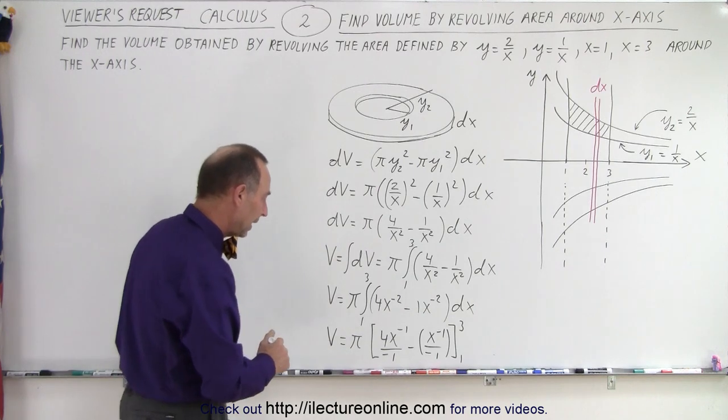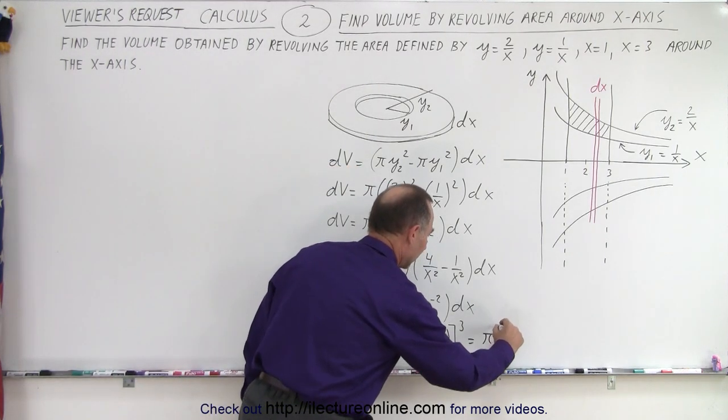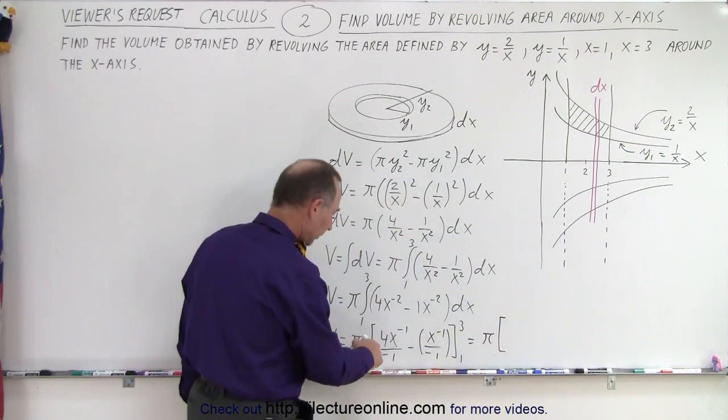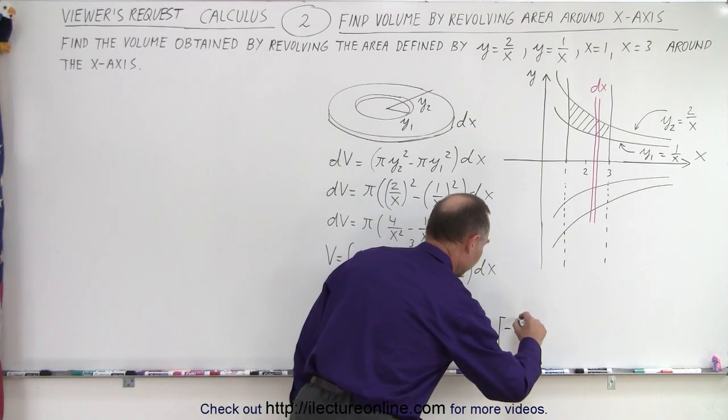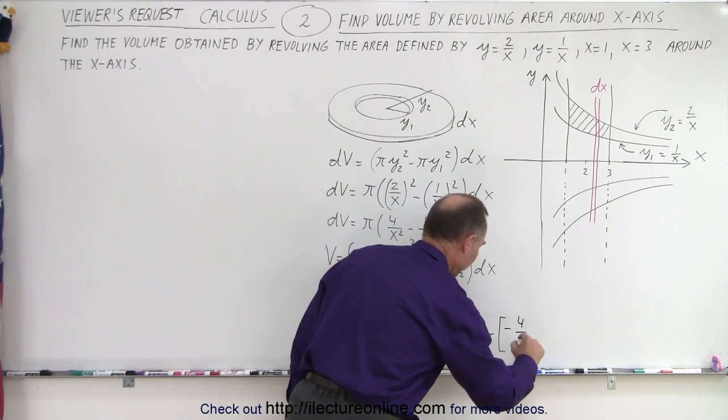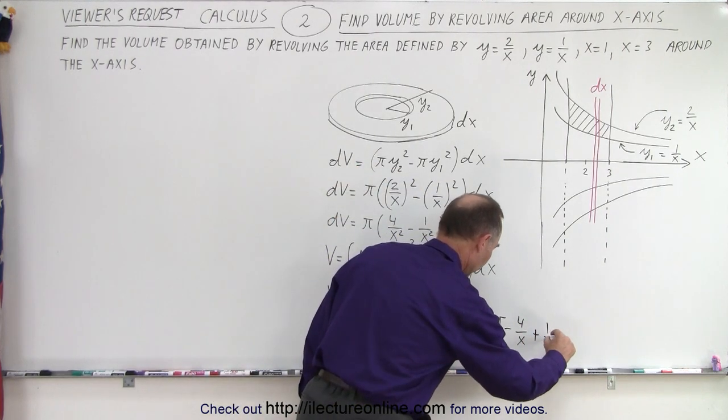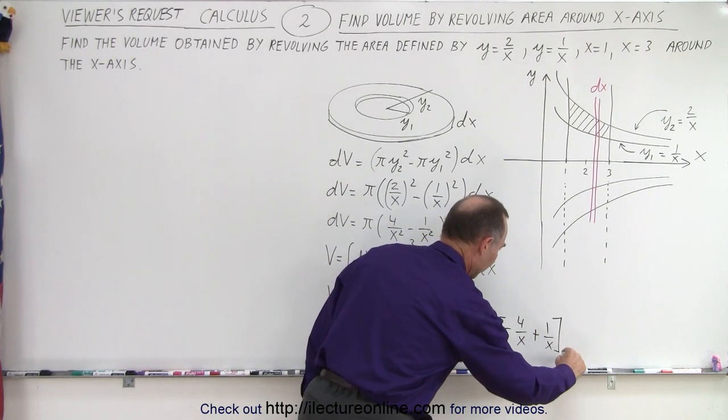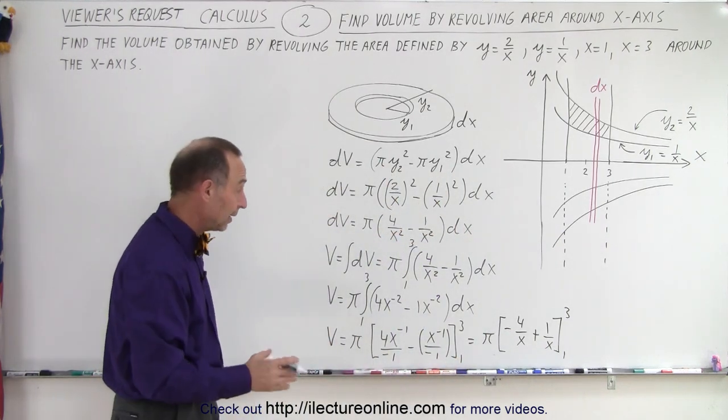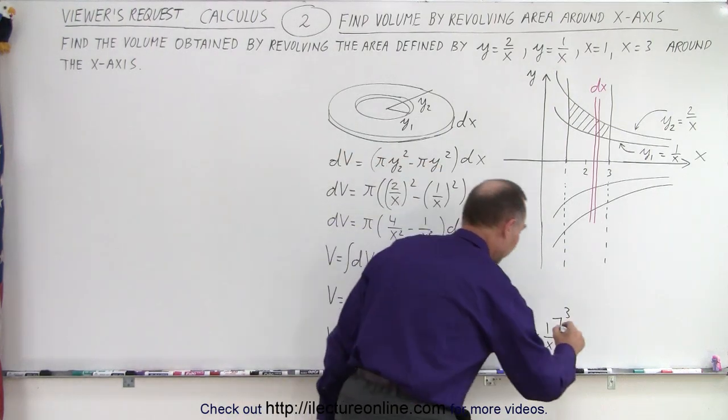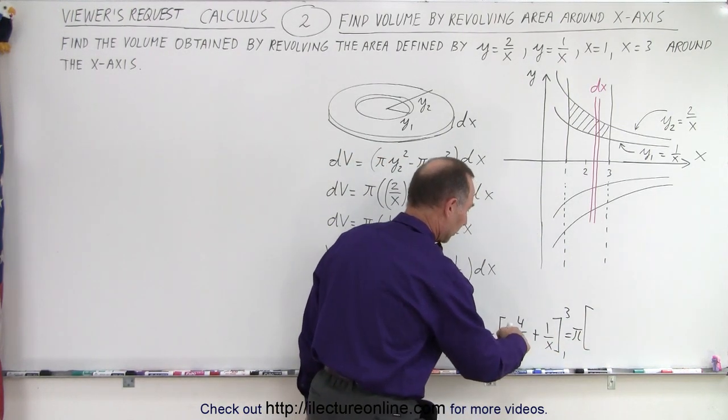Now we have to evaluate that, so we can rewrite that as π times (-4/x + 1/x), evaluated from 1 to 3. So we evaluate it by plugging the upper limit and then the lower limit. This is equal to π times, when plugging the upper limit, we get -4/3 plus 1/3.